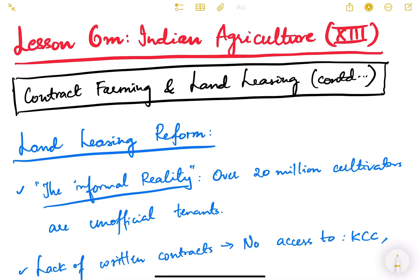Hello friends and welcome back to lesson number six. We are discussing Indian agriculture — this is the 13th video. We'll continue discussing contract farming and land leasing. In the previous video we studied what is contract farming, its challenges, and implications for small and marginal farmers. In this video we'll study about land leasing.